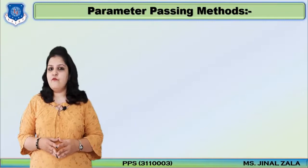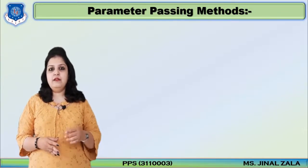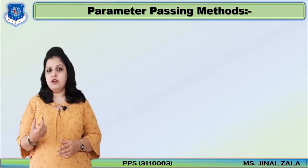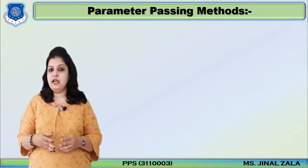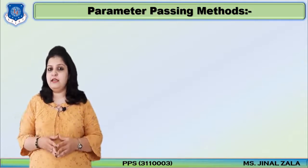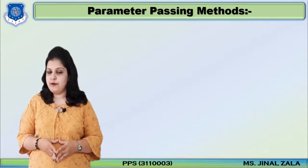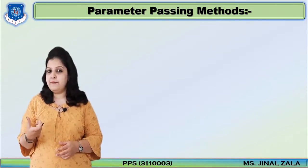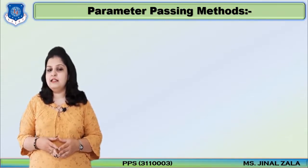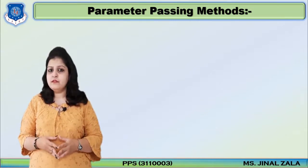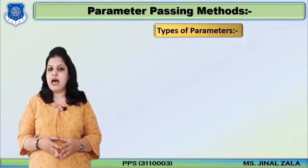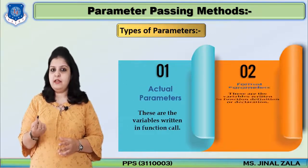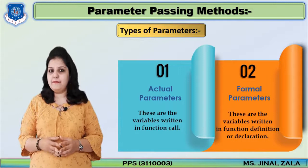First of all, what do you mean by parameters? In a program, when we declare our function, write a function call, or write a function definition, in those portions we can use different variables inside brackets for operations. These different variables are called parameters, or we can also say arguments. These parameters are mainly divided into two categories: first is actual parameters and second is formal parameters.